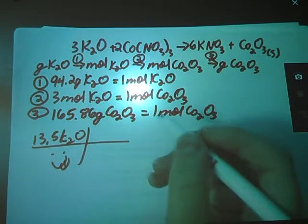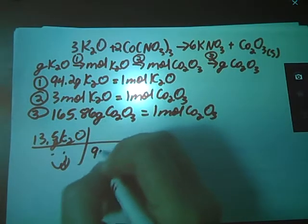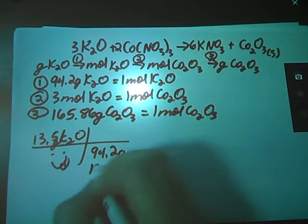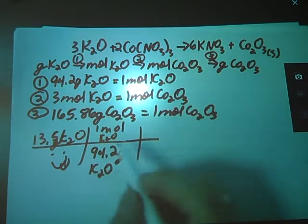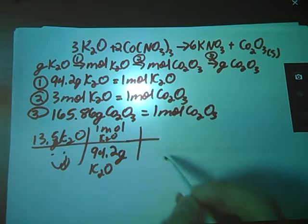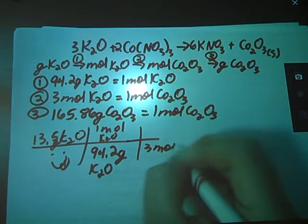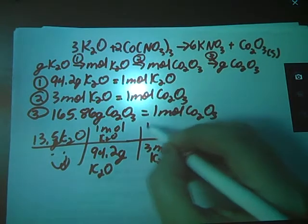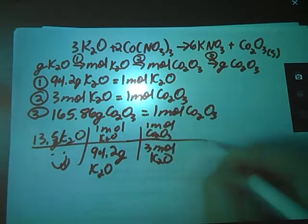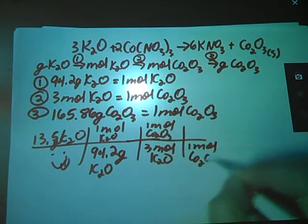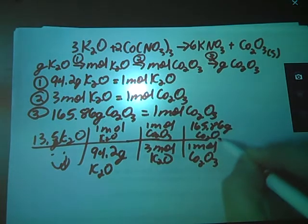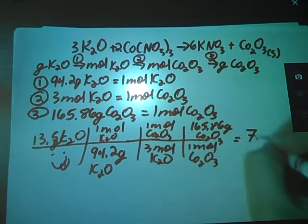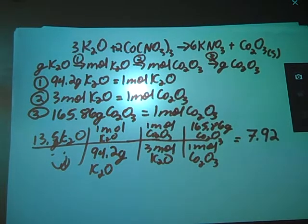They started me off with 13.5 grams of my potassium oxide. Here we go. Follow your units. Let them tell you what number goes where. One mole K2O. So that uses both pieces of this. Moles K2O here means I need moles K2O here, and there's a three with those moles K2O. Other half of the conversion factor goes on top. One more step, multiply all the way across the top, divided by all the way across the bottom, and we get 7.92 grams of my cobalt oxide.